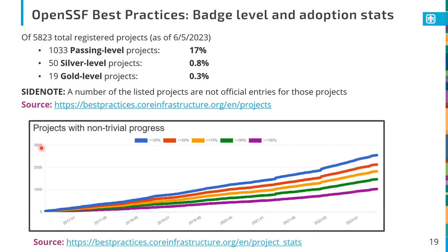Looking at badge level and adoption statistics: of the 5,800 projects registered as of June 5th, 70% had achieved a passing level, but only about 0.8% — 8 out of 1,000 — achieved a silver level badge, and only about 0.3% — 3 out of 1,000 — achieved the gold level badge. The percentage chart works such that 100% means you've satisfied all passing criteria, above 100% means you're on your way to silver, in the 200s means you've achieved silver and are heading toward gold, and 300 is the best you can get — gold level.